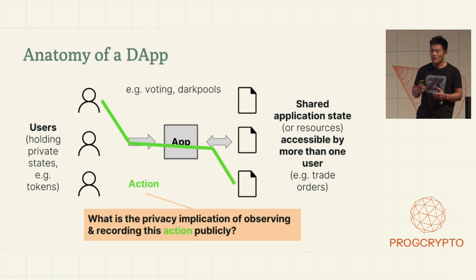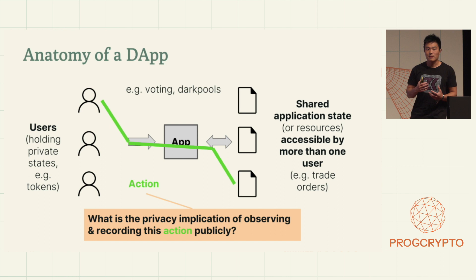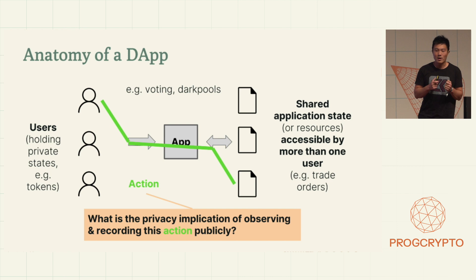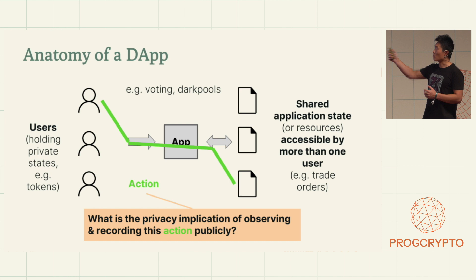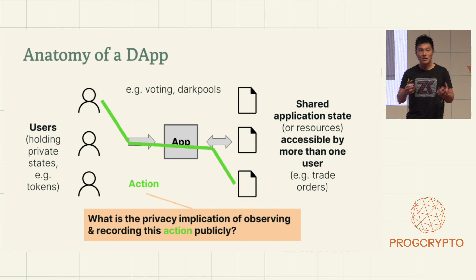I want to talk about what an application looks like. When I talk about a distributed application, I mean an application where multiple users can access it in a permissionless manner, and the application might also manage a set of resources in the back-end. Each resource might be owned by one or more users. For example, a voting proposal on Snapshot is a resource that everybody in a DAO can contribute to.